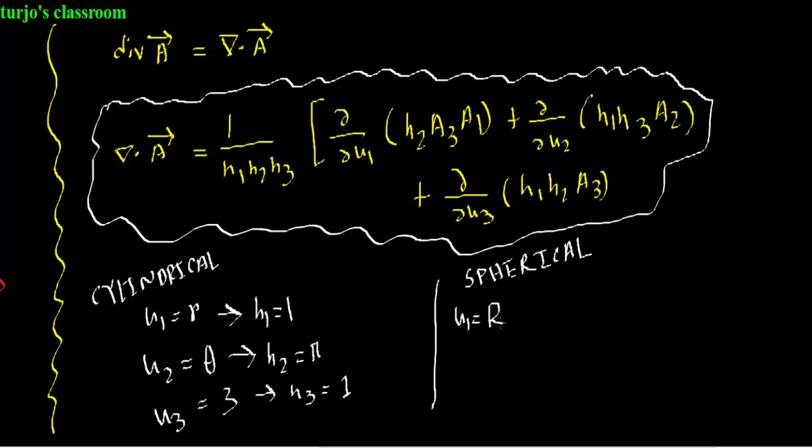And in a spherical coordinate system, u1 is capital R, u2 is theta, and u3 is phi. Therefore h1 will be 1, h2 will be r, and h3 will be r sin theta. So now it's time for some examples, and those who are having trouble to understand should go back and watch the previous episode.